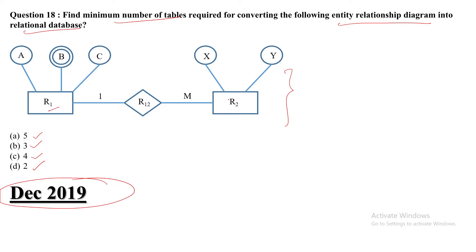You can see that here R1 and R2, two entities are given. Whenever two entities are given with one relationship it is a binary relationship. The cardinality ratio given is one-to-many. Many is represented by two types: M, or sometimes written as M. Do not be confused, both meanings are the same — one is to M, meaning many on the many side in the ER model.